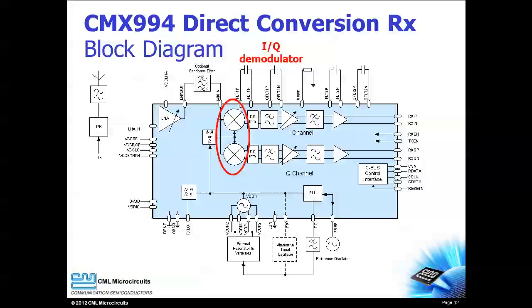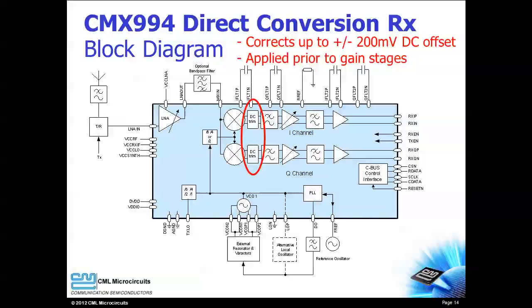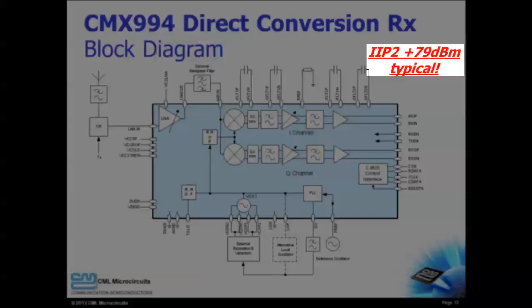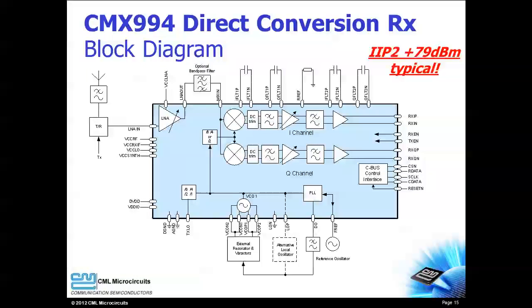The IQ demodulator has outstanding amplitude and phase balance. DC offsets are a known problem for direct conversion, and CML has mitigated this in two ways. First, a software adjustable DC offset feature is provided prior to the gain stages. This feature can correct up to 200 millivolts of DC offset, and a typical second order intercept of 79 dBm helps ensure that DC offsets will not be a problem in your CMX994 design.